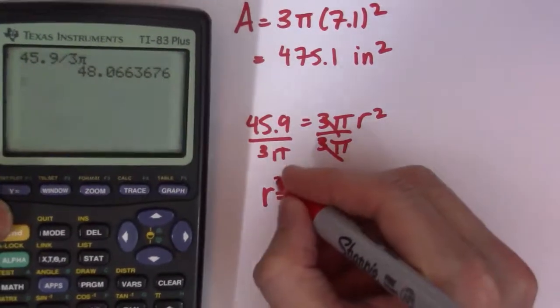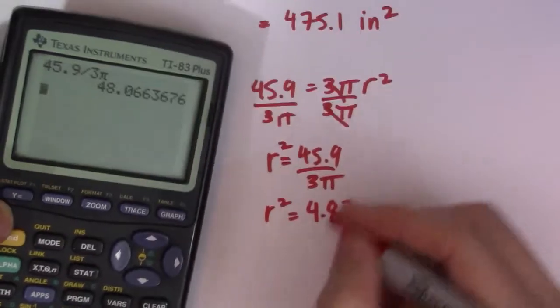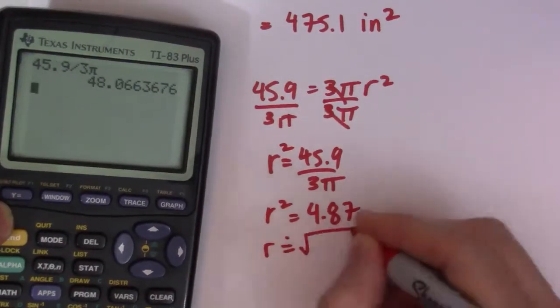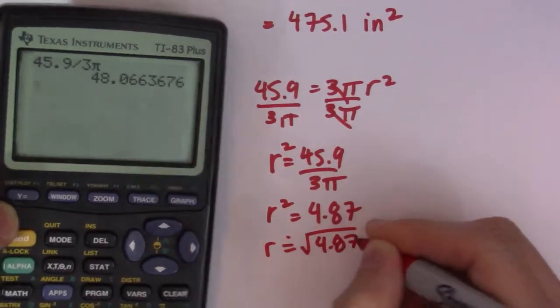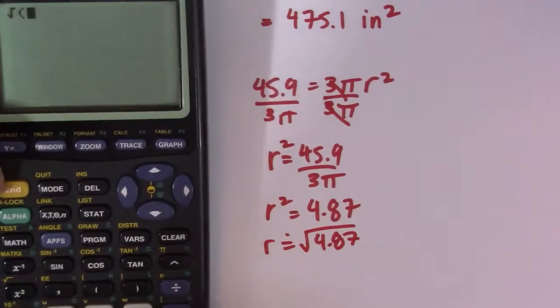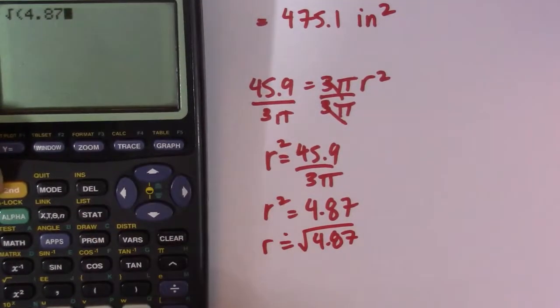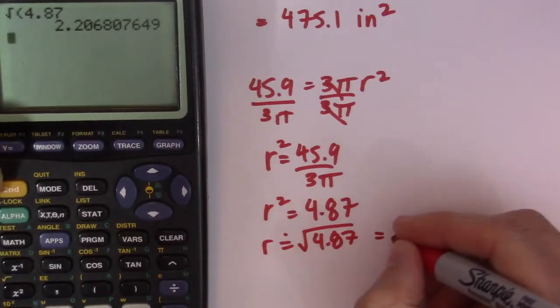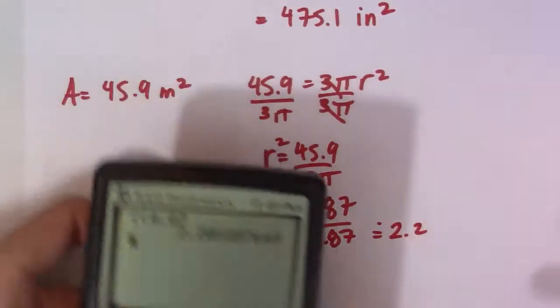So that's actually r², so now I need to take the square root of that. So square root of 4.87, and that gives me my radius of 2.2, and that is my answer.